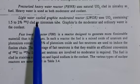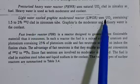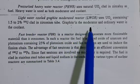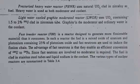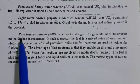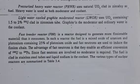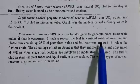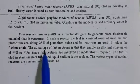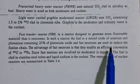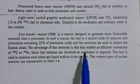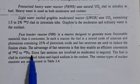The light water cooled graphite moderator reactor uses uranium dioxide containing 1.5 to 2% of uranium-235 clad in a zirconium tube. Graphite is the moderator and ordinary water is used as the coolant. The fast breeder reactor is designed to generate more fissionable material than it consumes. The fuel is a mixed oxide of uranium and plutonium containing 25% plutonium oxide, and fast neutrons are used to induce the fission chain. The advantage of fast neutrons is that they enable efficient conversion of uranium-238 to plutonium-239.